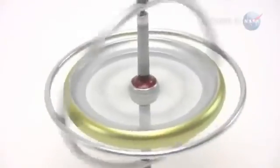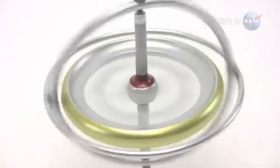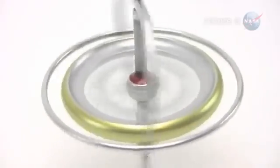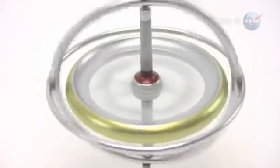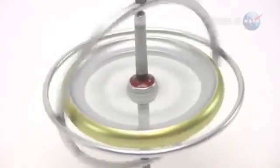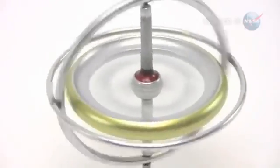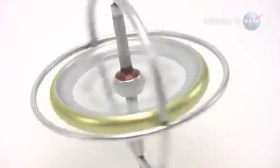The idea behind the experiment is simple. Imagine trying to spin a toy top on the dimpled surface of that trampoline. It's going to wobble, right? Something similar happens when you try to spin a gyroscope in curved spacetime. Its spin axis will drift, or precess.